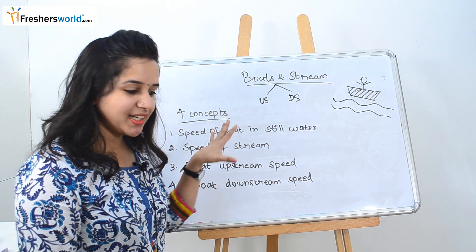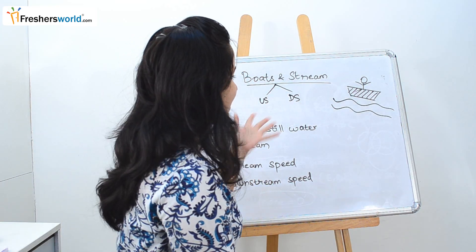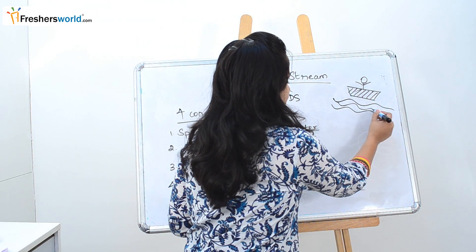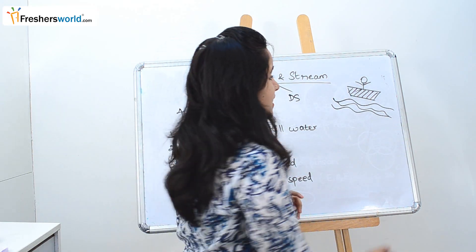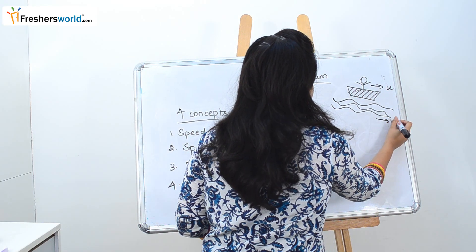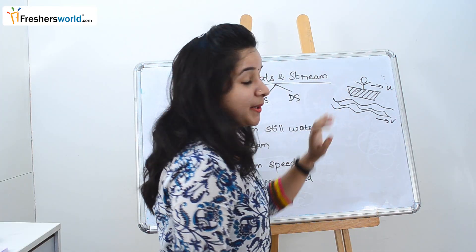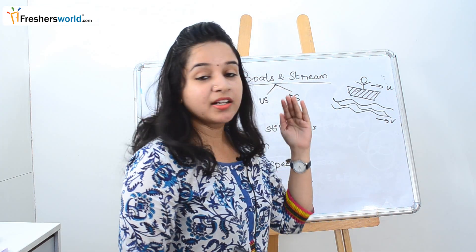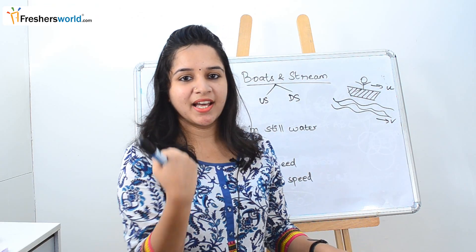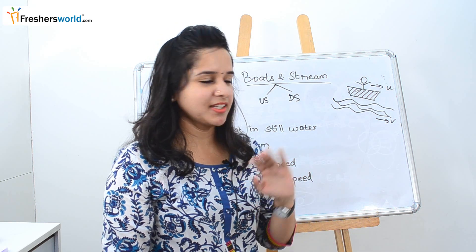Before going in depth into the concept, let's know what is upstream and downstream. Let's say this is a person travelling on a boat and the river is flowing this way. The boat speed is U and the river speed is V. Upstream is nothing but the river is flowing in a direction and you are going in the opposite direction — going against it is nothing but upstream.